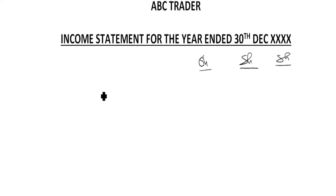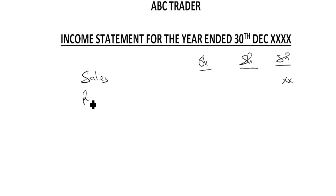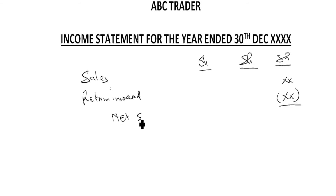So these are three columns. We start with the trading part like we did previously — we start with the sales, then put it in the other column. What adjusts the sales is return inward, which we subtract from the sales, and then you get the net sales. From there you get to the cost of sales part.